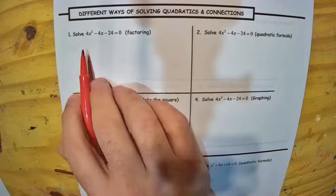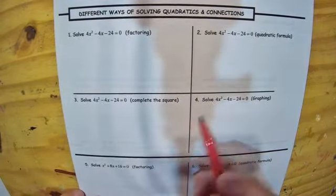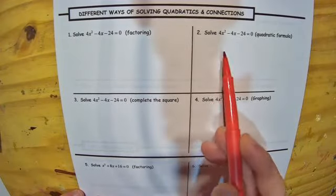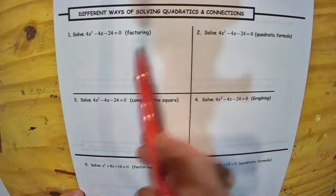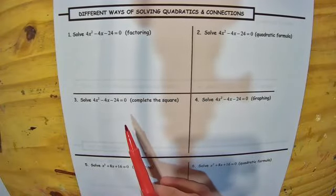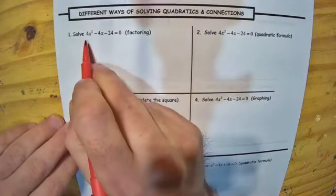This is the No Packet, page 12. We're talking about different ways to solve the same quadratic equation. These four problems are all the same problem, and you're being asked to solve it in four different ways to see how these things are connected.